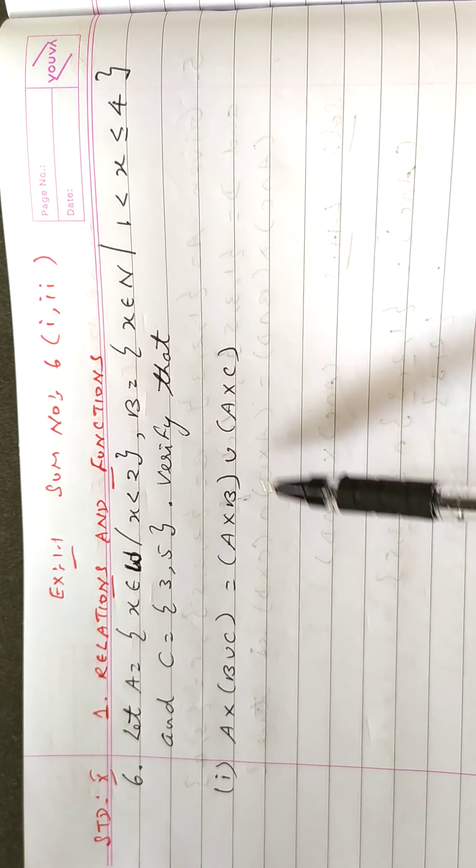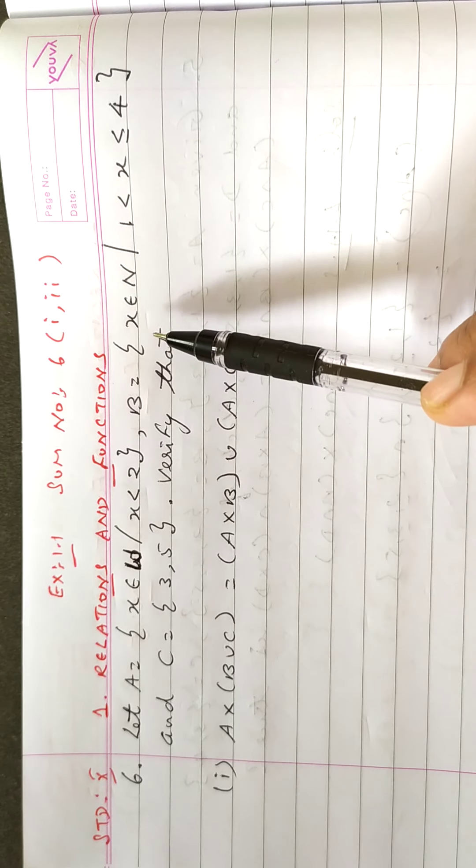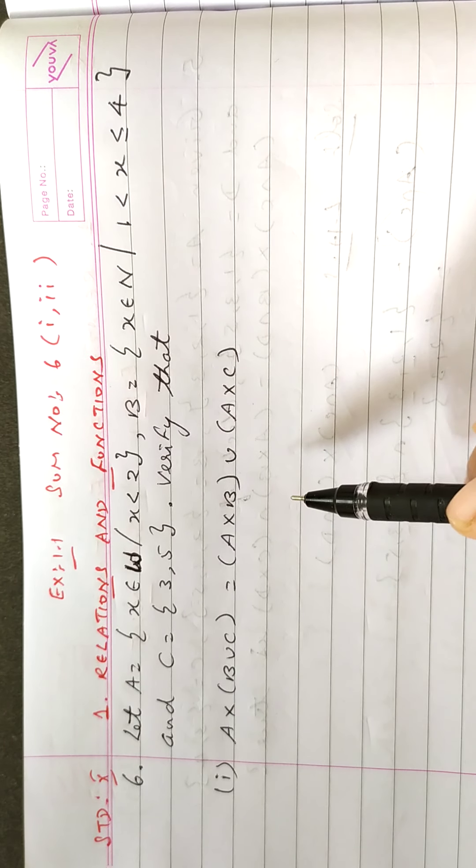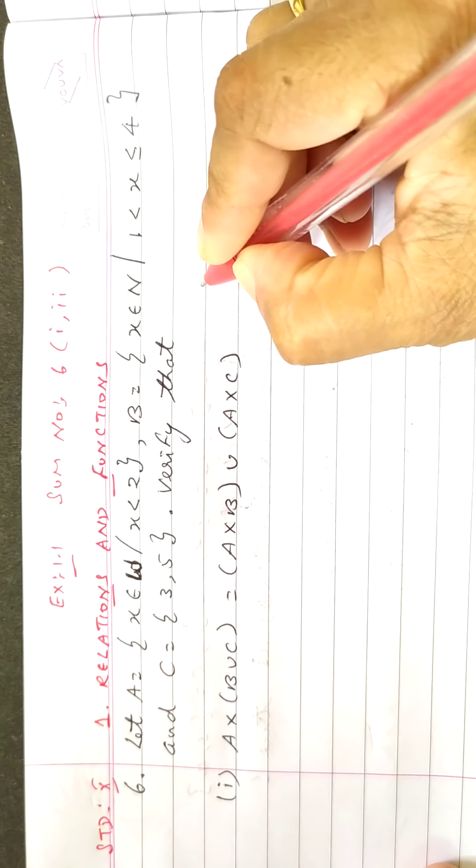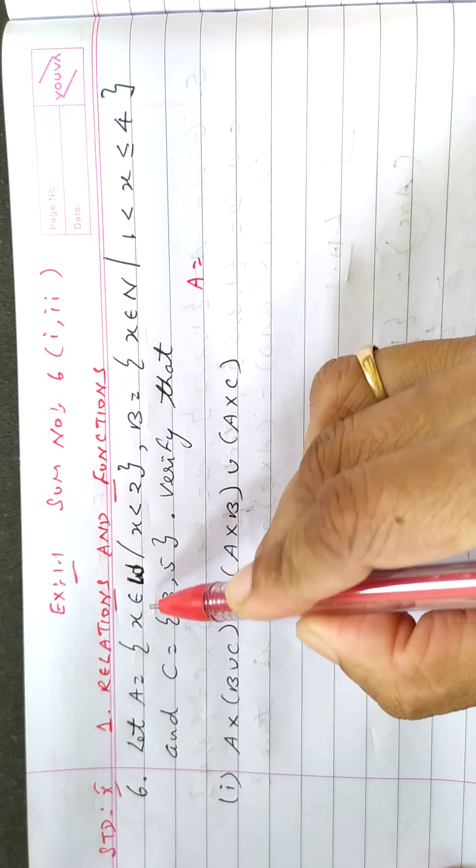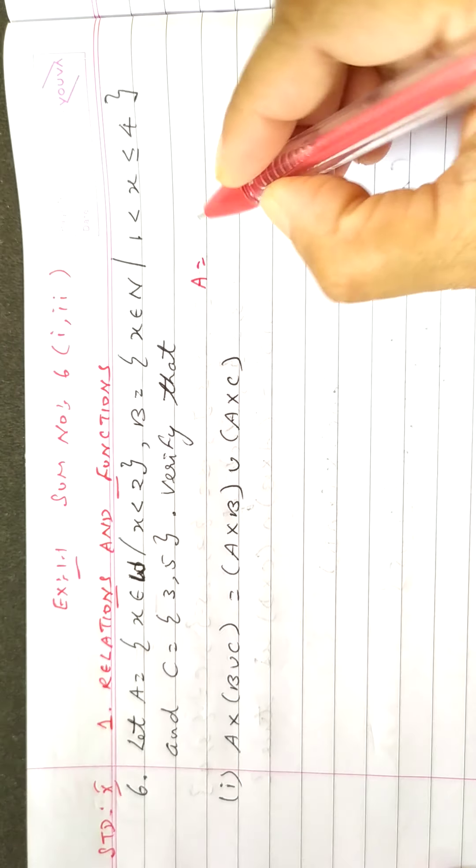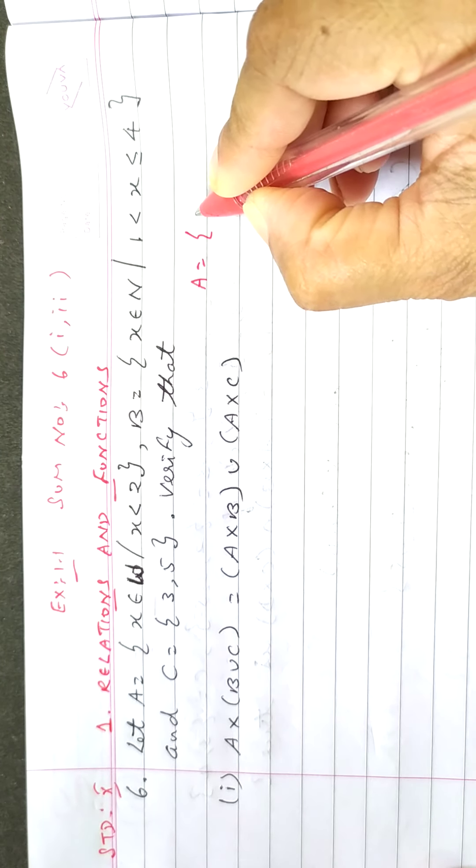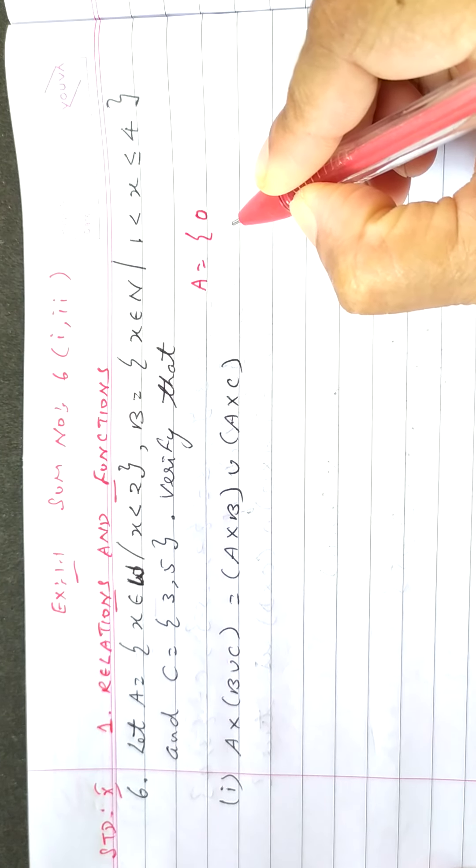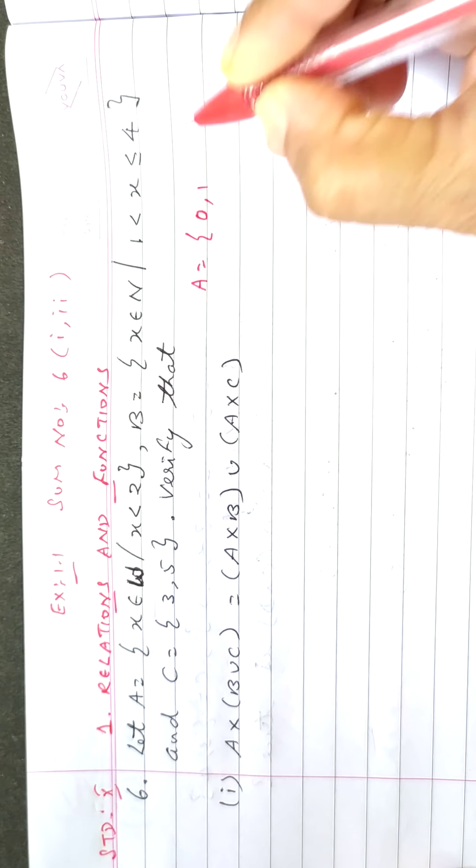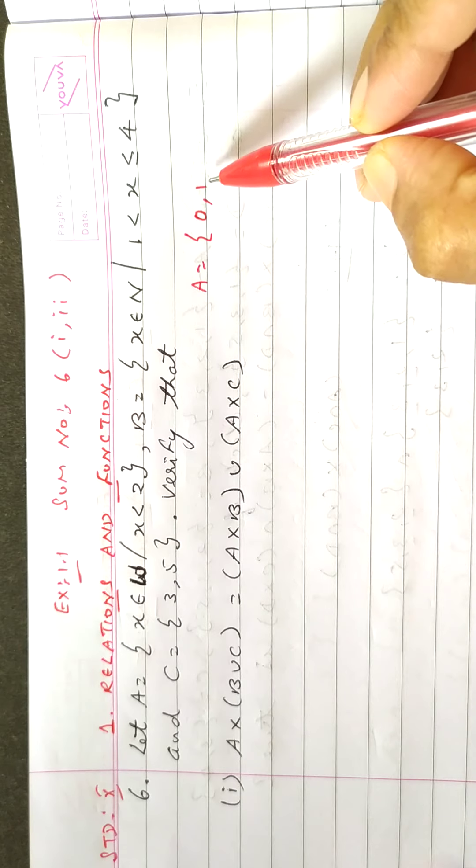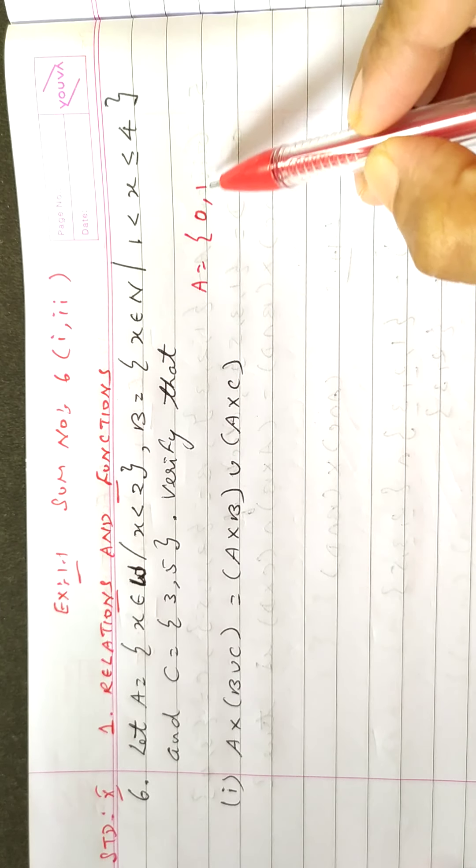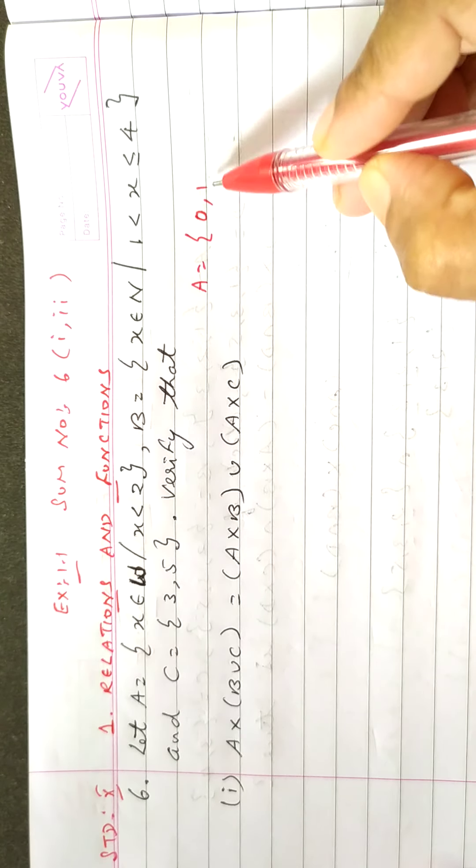First we can find set A. Set A is nothing but x belongs to whole number x less than 2. You know well whole number starts from 0, isn't it? So 0, 1, we can do x less than 2. So your set A is 0,1.